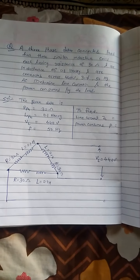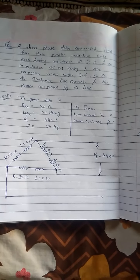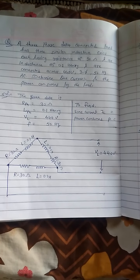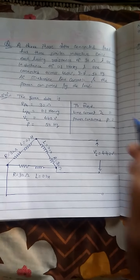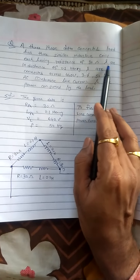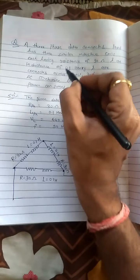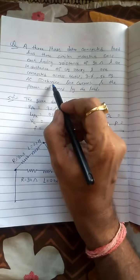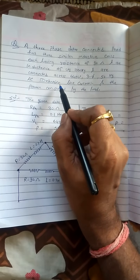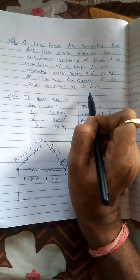Hello students, this is our new numerical on delta connected system or delta connected load. A three-phase delta connected load has similar inductive coils, each having a resistance of 30 ohm and an inductance of 0.1 henry, connected across 440 volts, three-phase 50 hertz AC. We need to determine line current and the power consumed by the load.